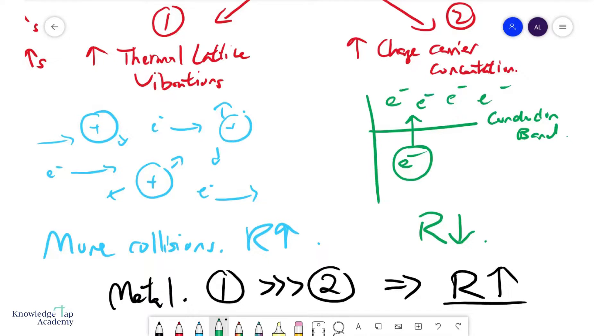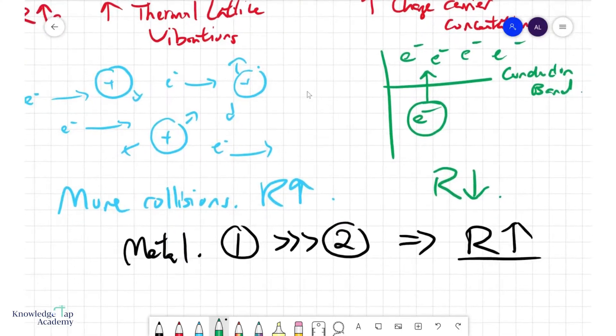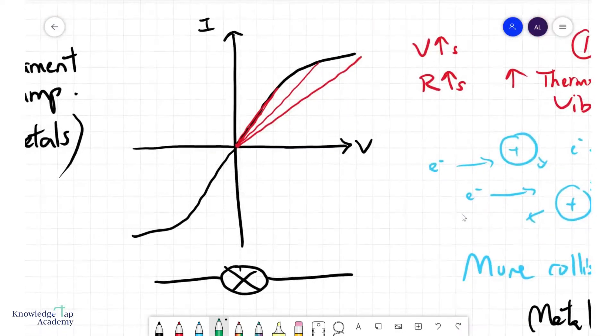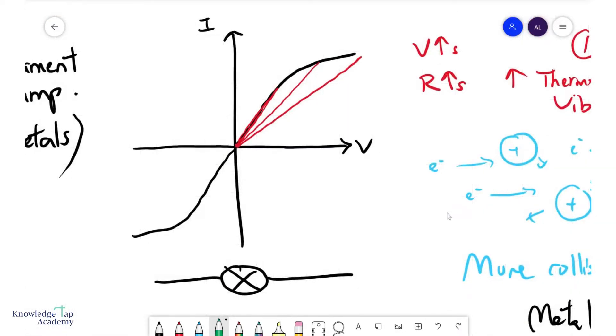So if you bring a few more into that conduction band, it's not going to really make much of a difference. It is the thermal lattice vibrations that are more significant and create a more significant effect on the resistance. The effect, of course, is this: voltage increases, resistance increases.